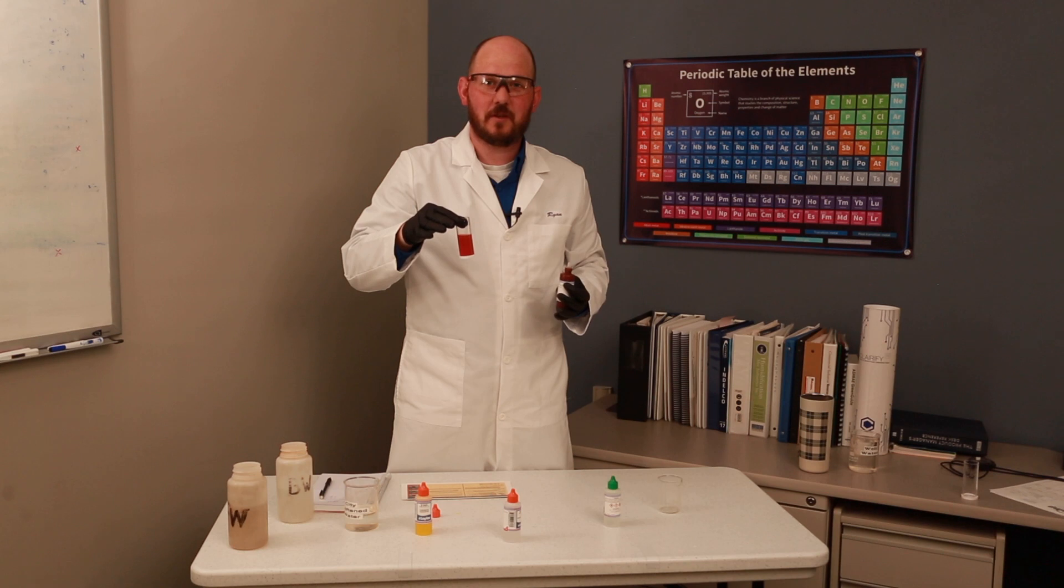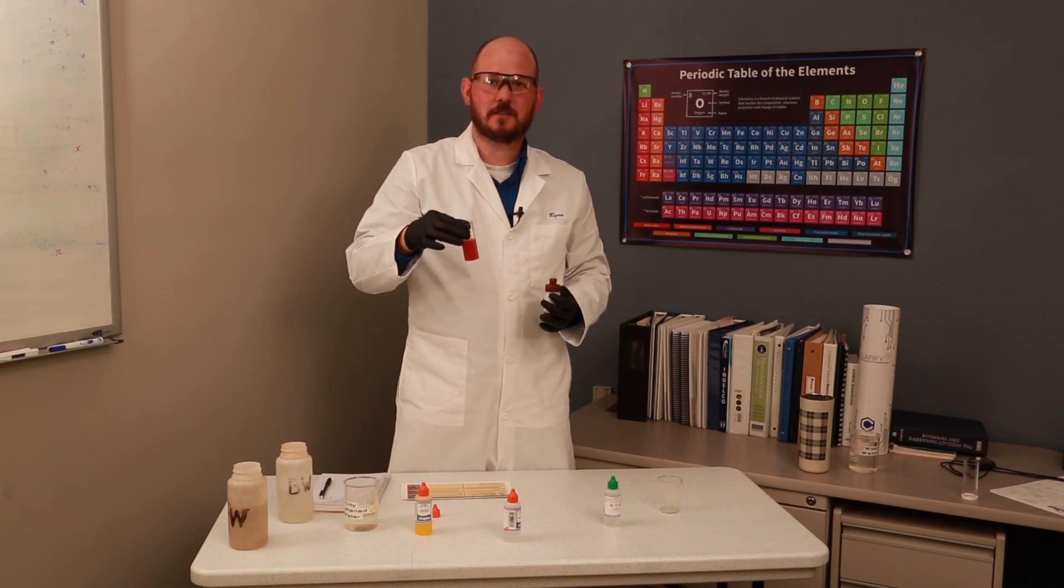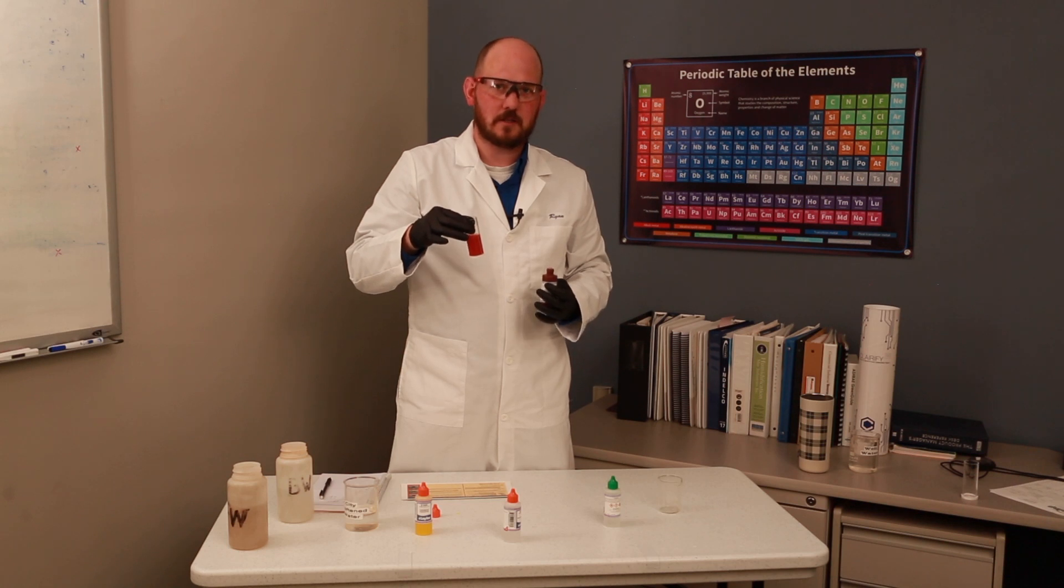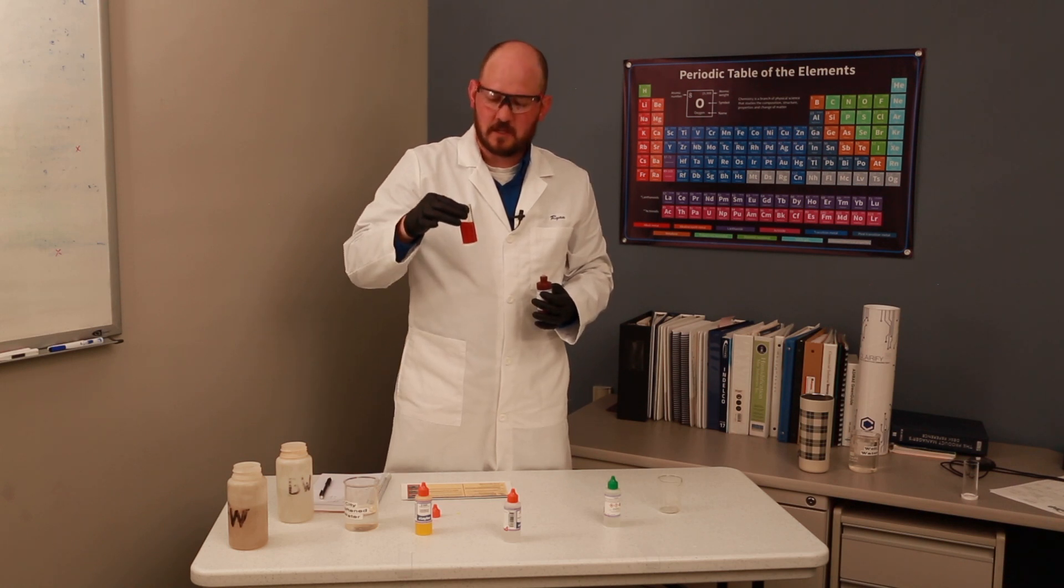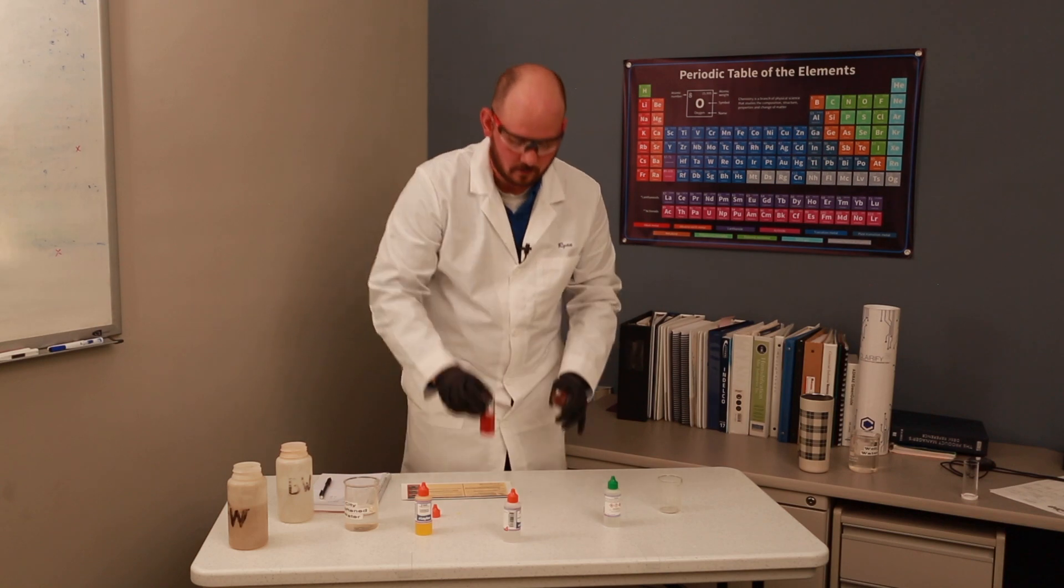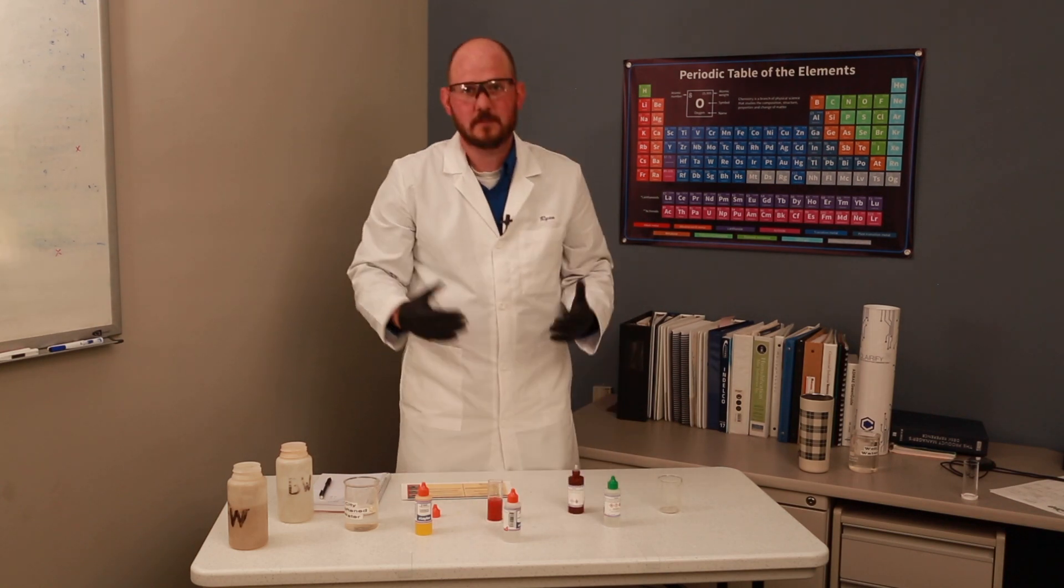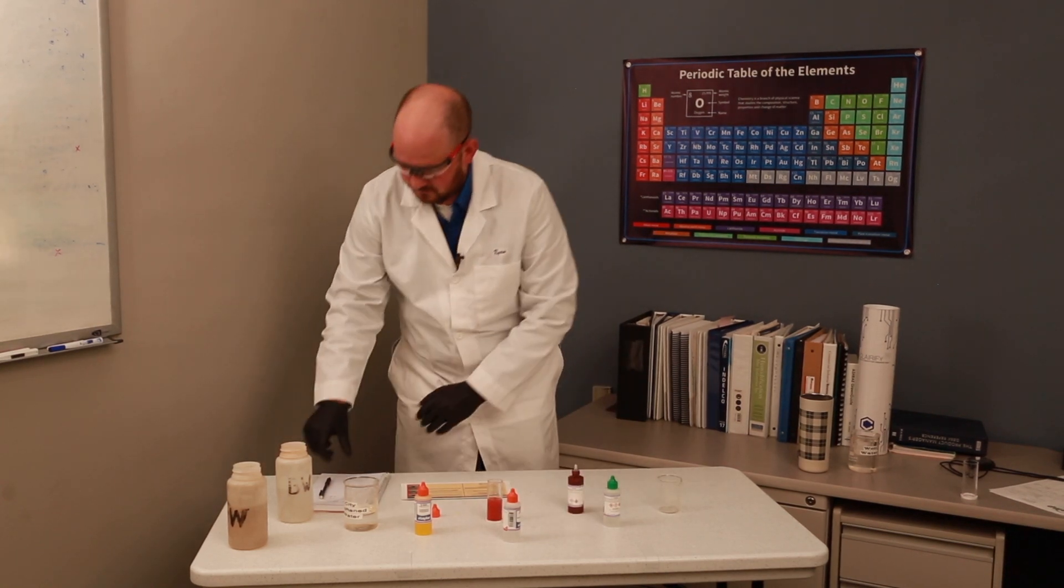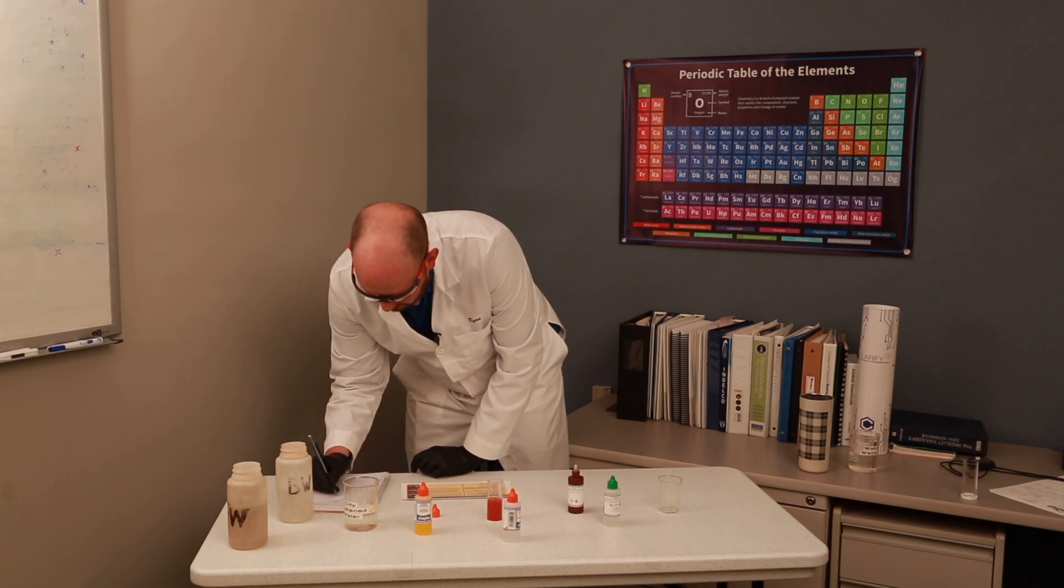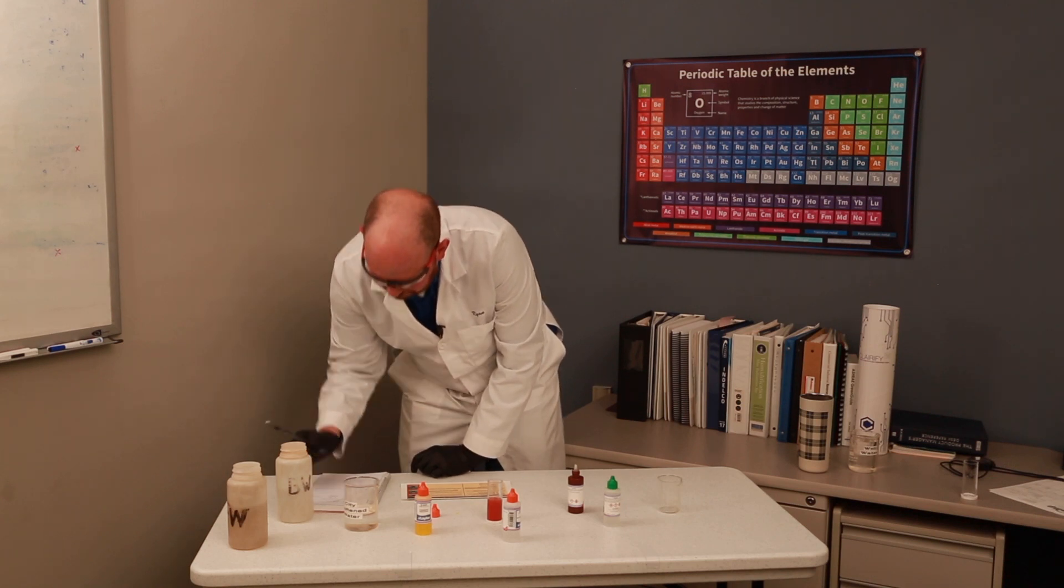The reason this is a different value than the test just a minute ago is this is a different well sample. This is well water versus our softened water supply. So this sample had 70 ppm of chloride - seven drops times 10 gives us 70 ppm. We're going to record that. And with that, this test is concluded.